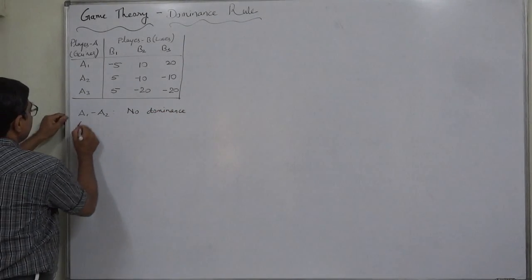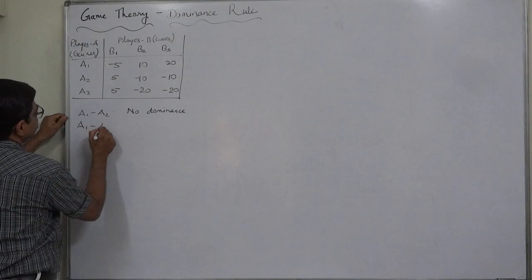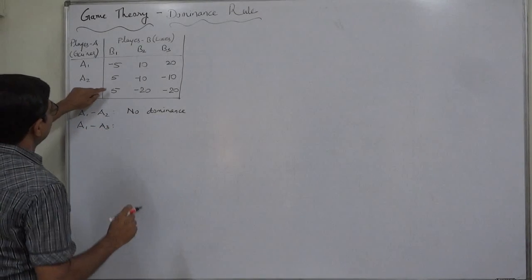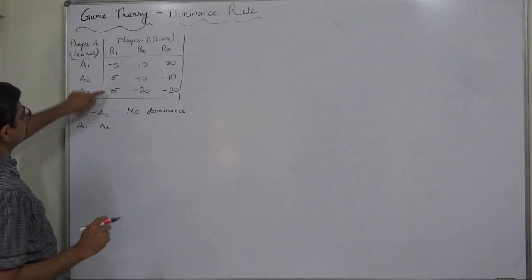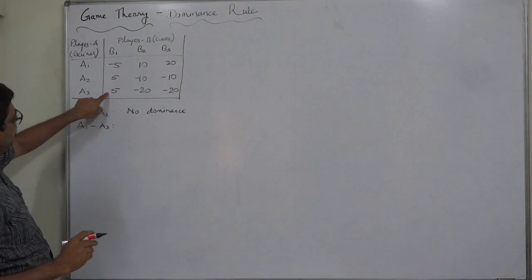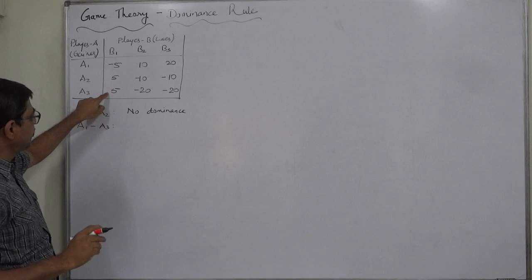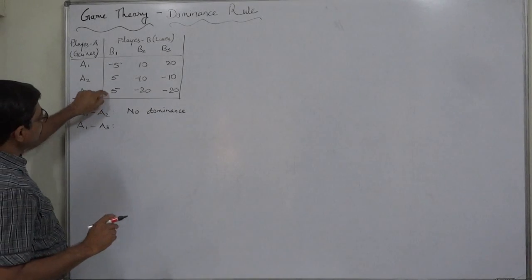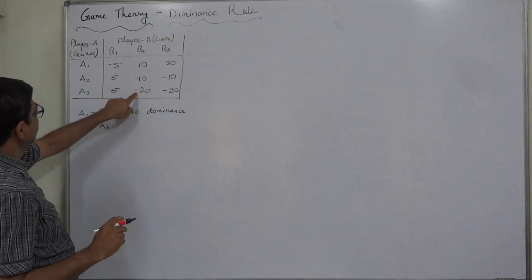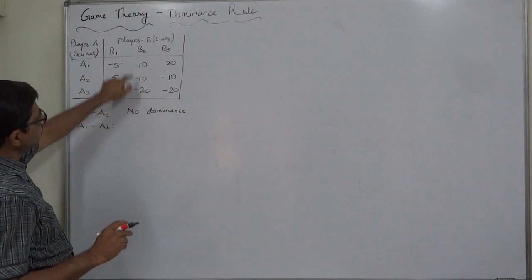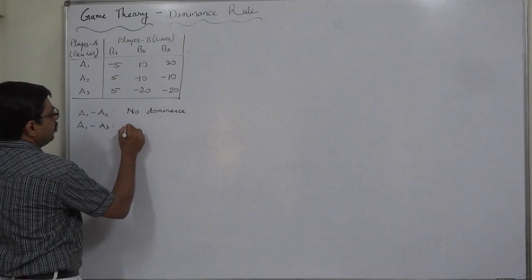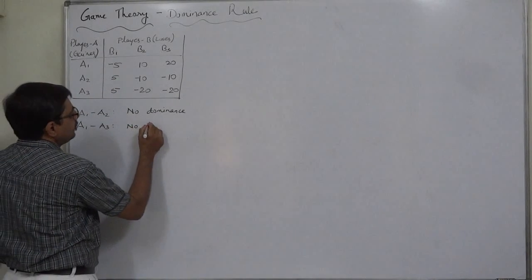Now let's compare A1 and A3. In the first case, A3 has the greater gain. In the second case, A1 has the greater gain. So again, no dominance is established between A1 and A3.